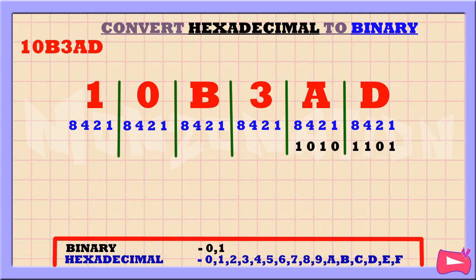A is the sum of 8 and 2, so we're going to replace 8 and 2 with 1. We didn't use the 4 and 1, so let's replace them with a 0.